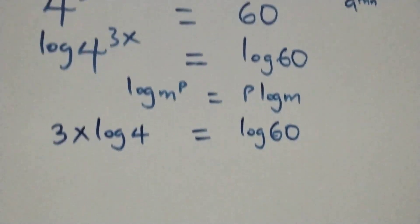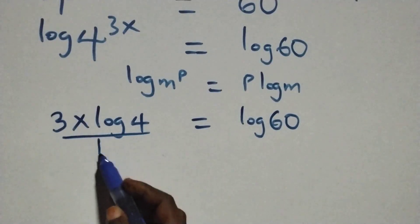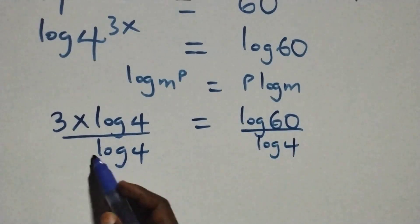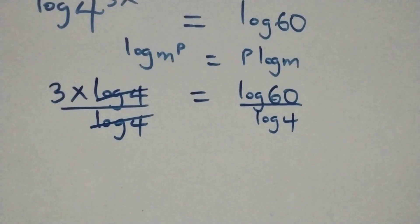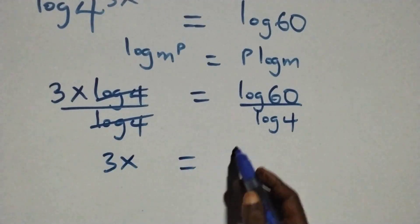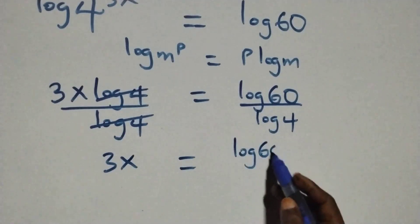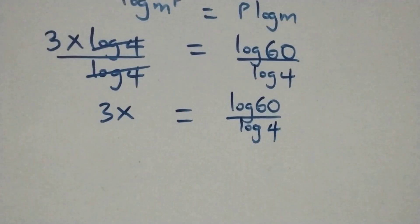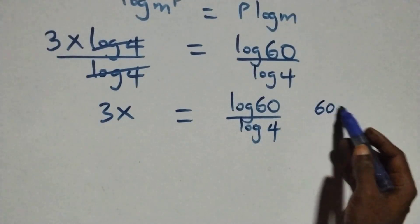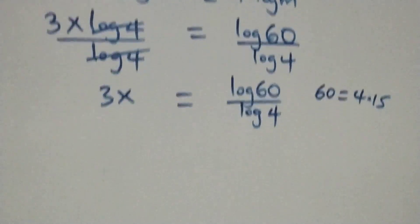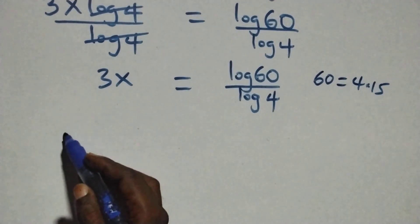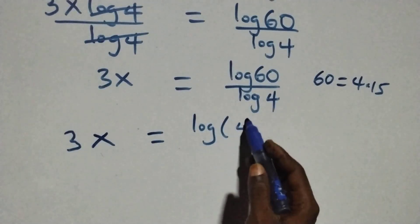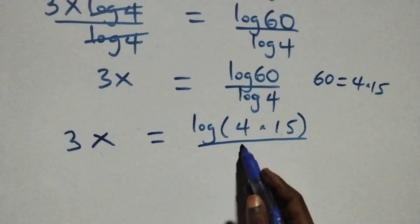The next step here, we divide both sides by log 4 — that is, divide this side by log 4 and also divide this side by log 4. The log 4 terms cancel each other, and what we have becomes 3x equals log 60 over log 4.